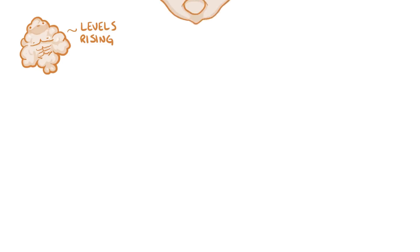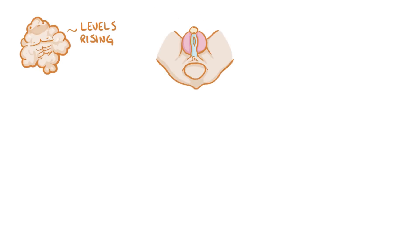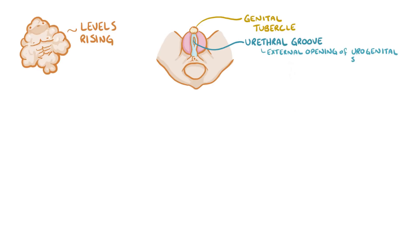Over time, dihydrotestosterone levels start rising, and it affects undifferentiated genital structures. Looking closely at these structures, at the top there's the genital tubercle, which is a small projection. Just below that there's the urethral groove, which is the external opening of the urogenital sinus, or the future urethra and bladder, and that's surrounded by the urethral folds and the labioscrotal swellings.